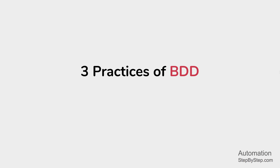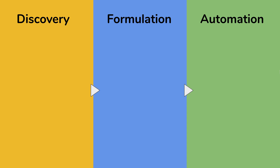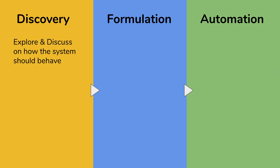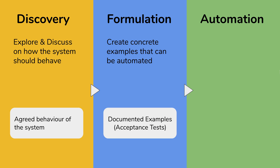Therefore in BDD, we have three practices or three phases. The first one is Discovery, then we have Formulation, and then finally we have Automation. In the Discovery phase, teams meet, explore, and discuss the user story and how the system should behave. The outcome of this phase is the agreed behavior of the system. In the Formulation phase, concrete examples are created based on the agreed system behavior, for use in development and automation. The outcome is the documented examples and acceptance tests.